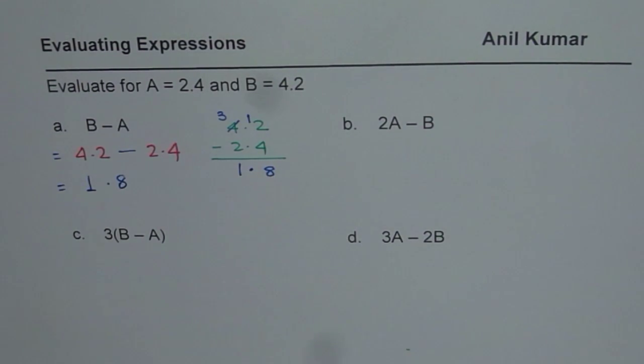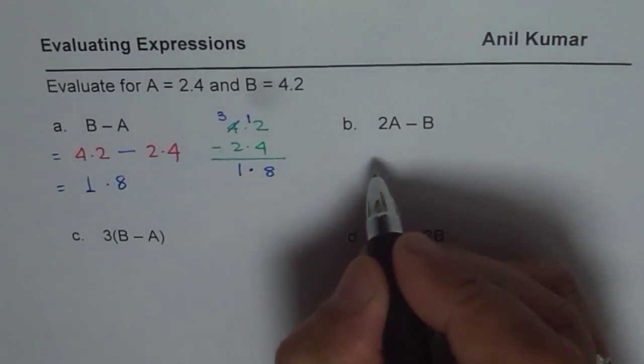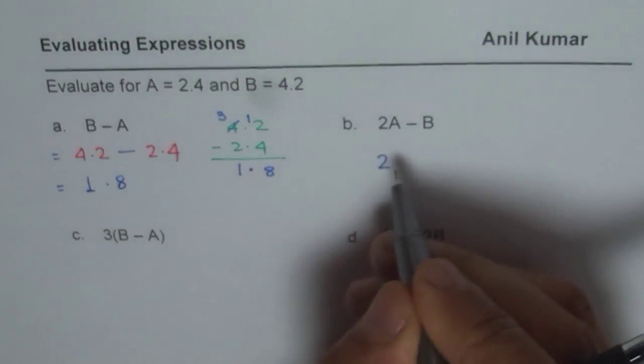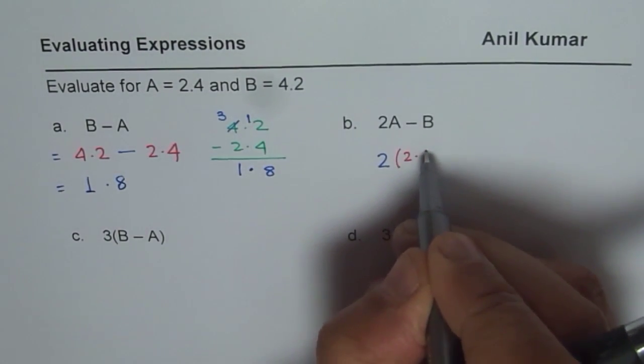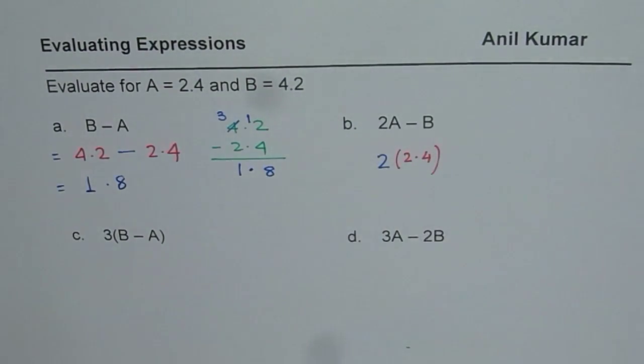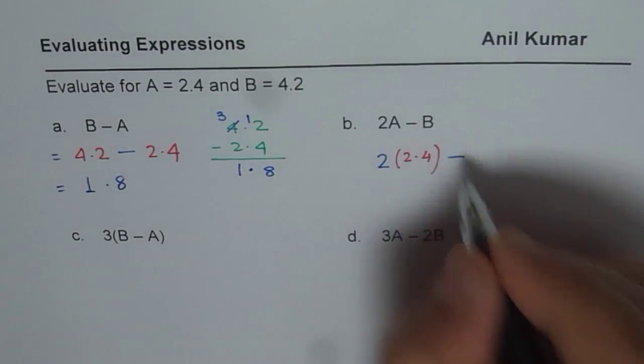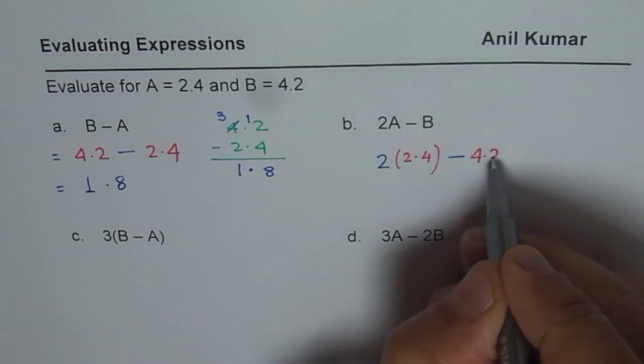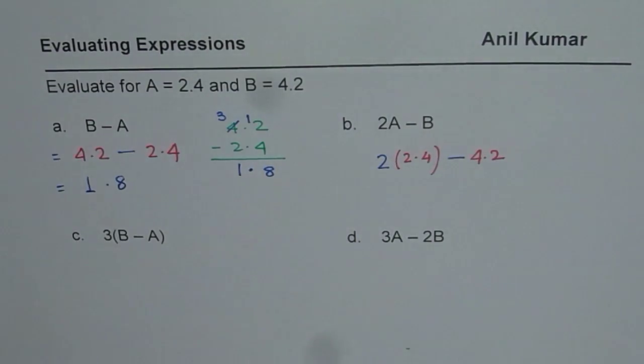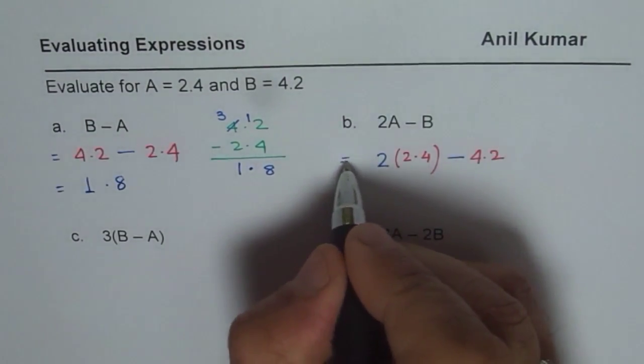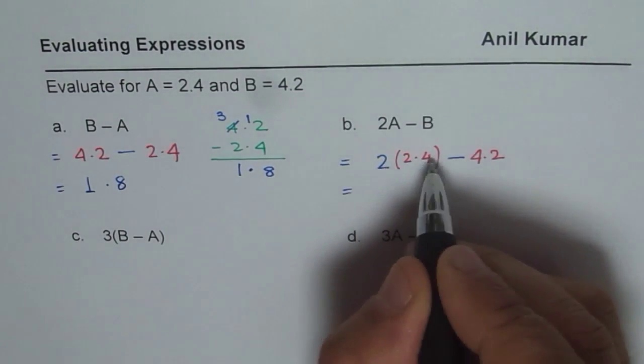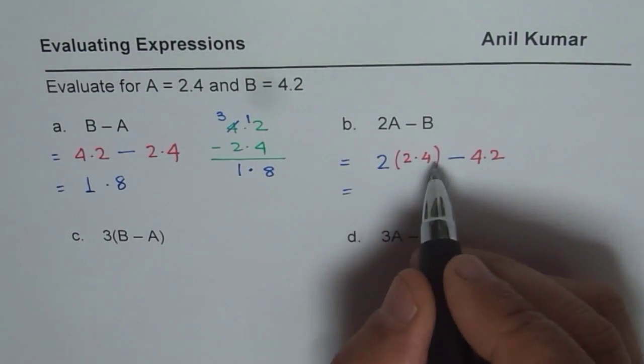Let us do part 2. Now here we have 2 times A minus B this time. So 2 times A and A is 2.4, so let me write this value in bracket. Minus B, so we will do minus 4.2. So in the first step, substitute the value given to you for the variable. So A is 2.4, B is 4.2.